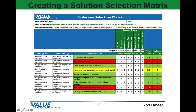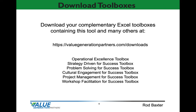Those with the lowest scores get an N for no — we're not going to implement those. And some receive a question mark, meaning we may come back and implement them as well, as they fall somewhere in the medium score level. That's an example of creating a solution selection matrix.